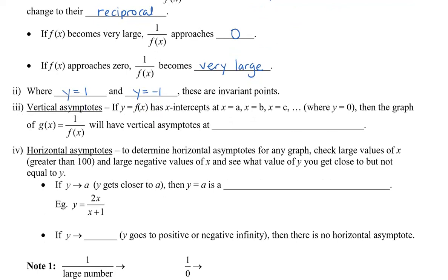We had vertical asymptotes: if y equals f of x has x-intercepts at x equals a, b, and c, then the graph of the reciprocal will have vertical asymptotes at those x-intercepts — x equals a, x equals b, x equals c, and so on.